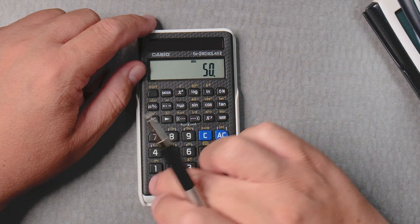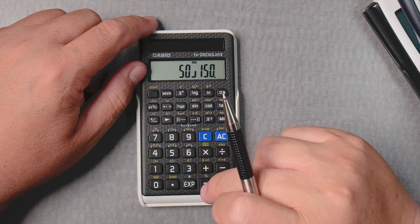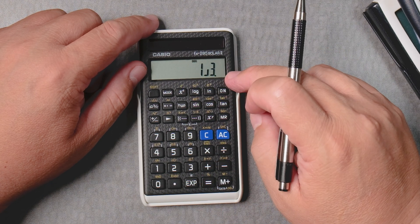Let's say I want to reduce 50 over 150. You press equals, and then it's 1 third automatically.